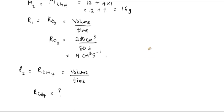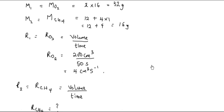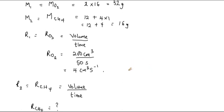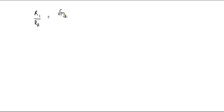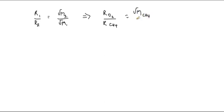Moving forward: we have M₁, M₂, and r₁. R₂ remains unknown. To get r₂, we go back to the equation and make r₂ the subject of the formula. We have r₁ over r₂ = √(M₂) / √(M₁), which is: rate of diffusion of oxygen over rate of diffusion of methane = √(molecular mass of methane) / √(molecular mass of oxygen).